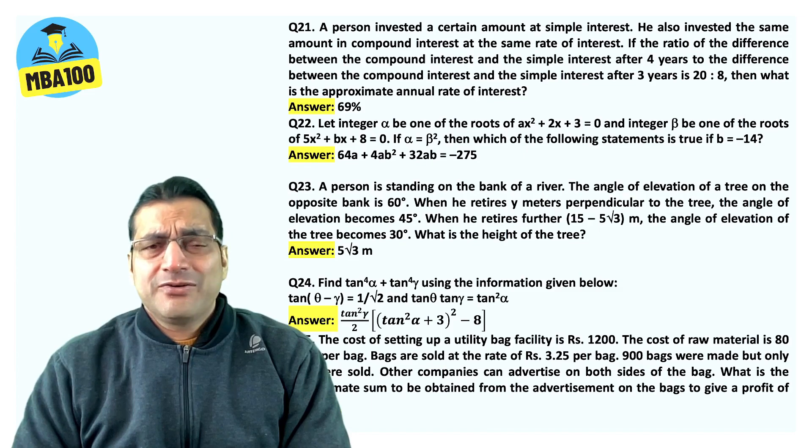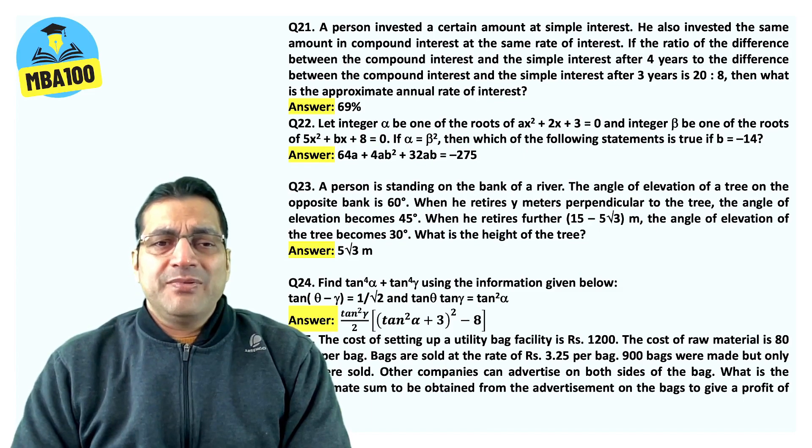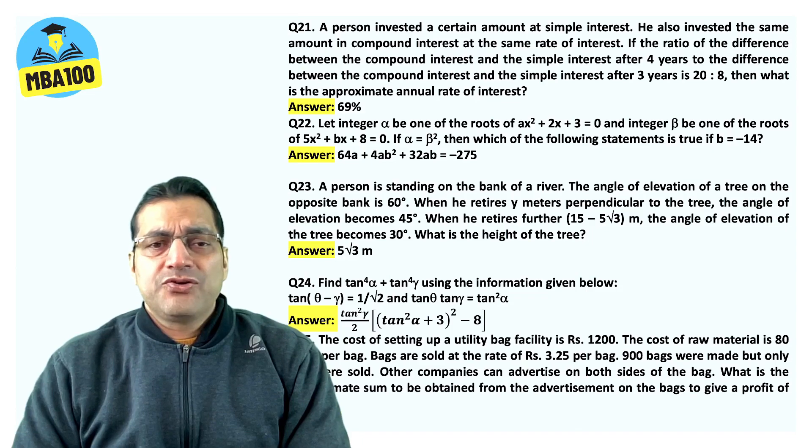And then a trigonometry question. I do not know why did they put this question here. But the answer is 10 square gamma by 2 into 10 square alpha plus 3 whole square minus 8.